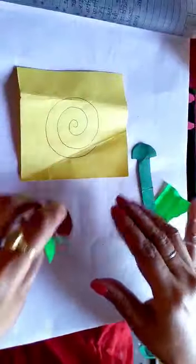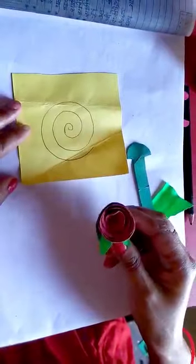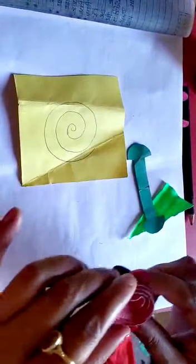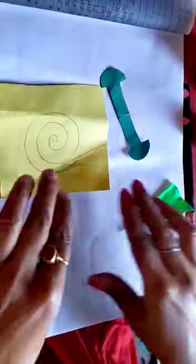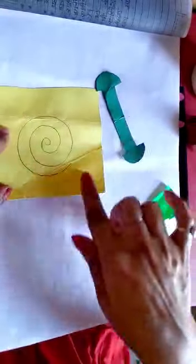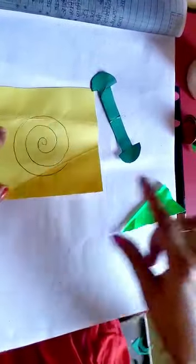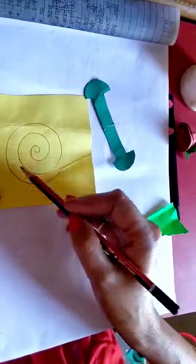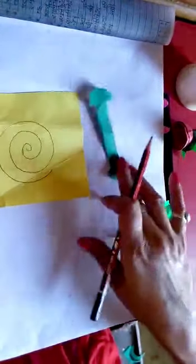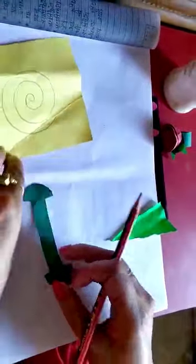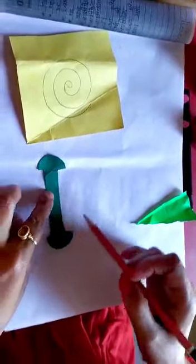Look at this. For making this paper rose we need some materials like one square shape. I'm drawing the circle on the sheet and then one green paper, cut out in this shape.